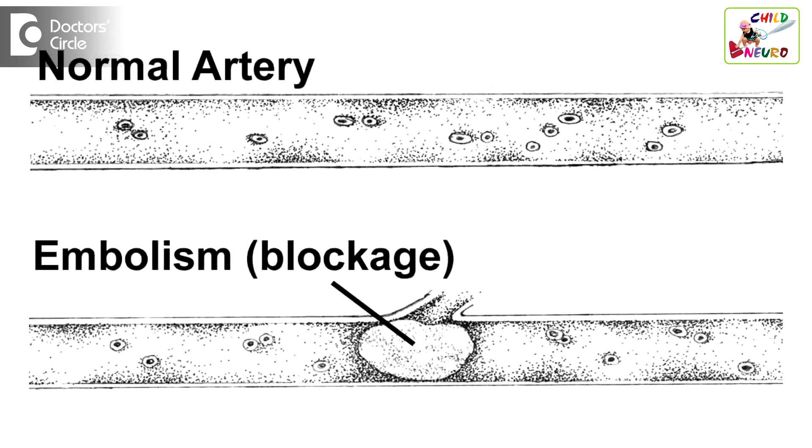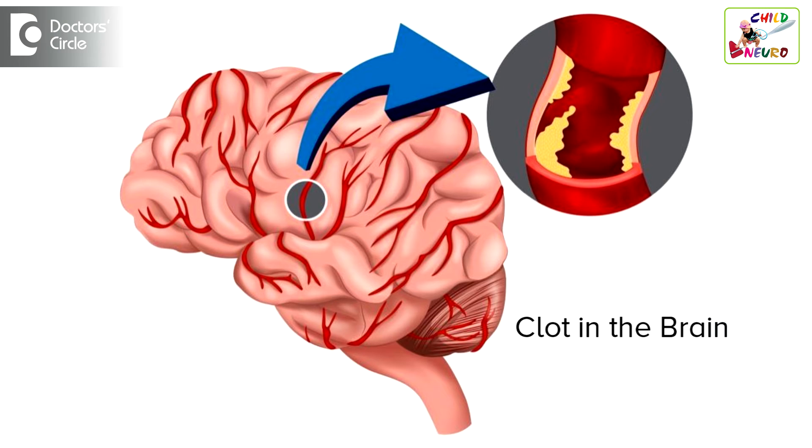If any child comes with one-side weakness, initially you need to assess the child for emergency management. You need to find out whether the weakness is because of thrombosis or embolism, or if it is due to bleeding. Management differs in each case. If it is due to bleeding, you need to find out the reason for the bleed and treat it appropriately. If it is due to thrombosis or a clot, then you need to give medicine to dissolve the clot.